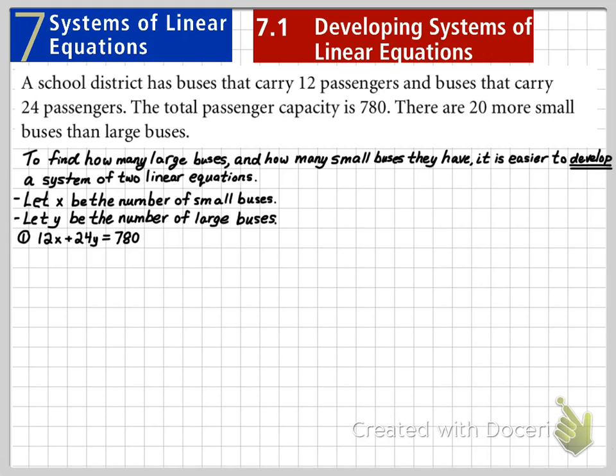Secondly, if we said that there's 20 more small buses than larger buses, we can say X would equal Y plus 20. This is called a system of linear equations. We have two equations with two unknowns.